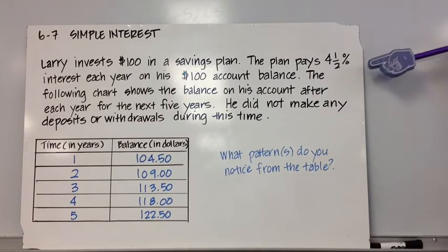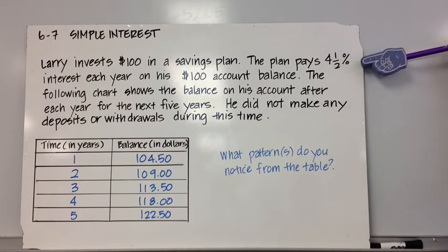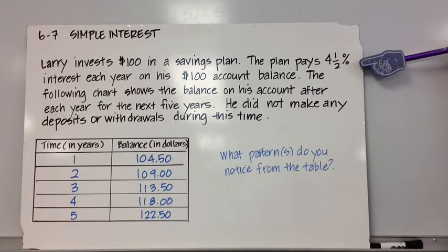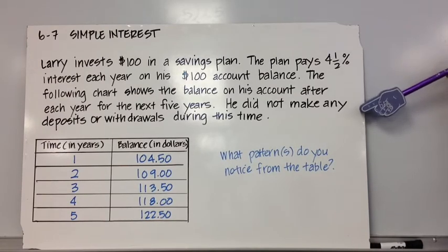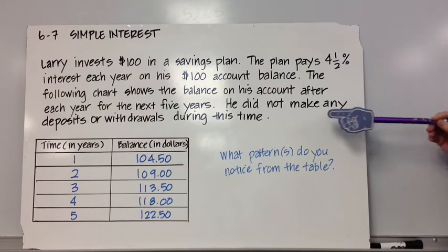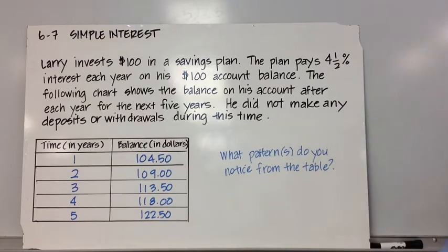Larry invests $100 in a savings plan. The plan pays 4.5% interest each year on his $100 account balance. The following chart shows the balance in his account after each year for the next 5 years. He did not make any deposits or withdrawals during this time.